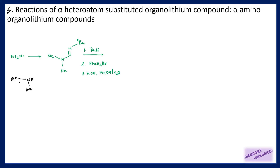It should remove hydrogen from the carbon adjacent to the heterosubstituted position, but these amines are unreactive in nature — direct lithiation is not possible. So when I substitute this secondary amine with a group like this, this structure is called a formamidine, then it will become reactive in nature and it can participate in organolithium reactions.